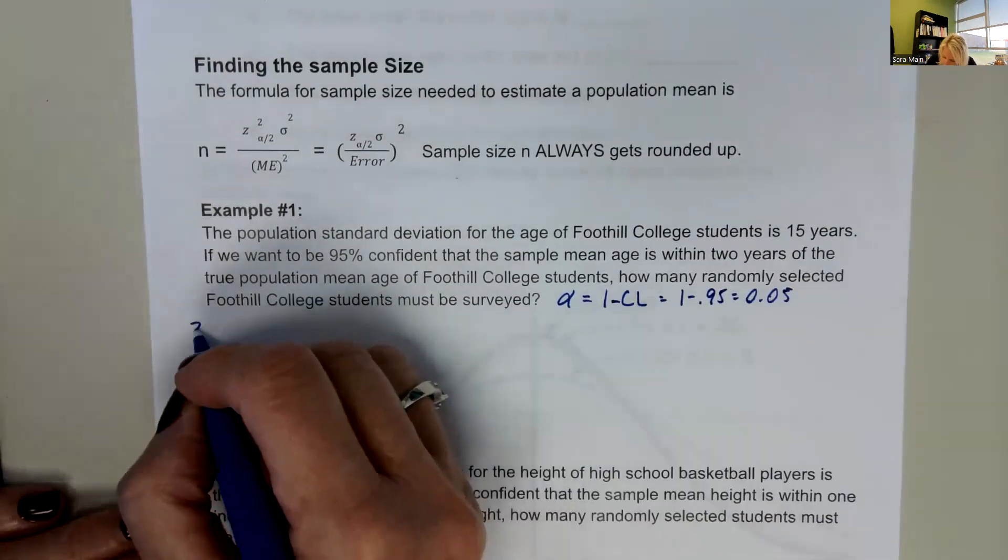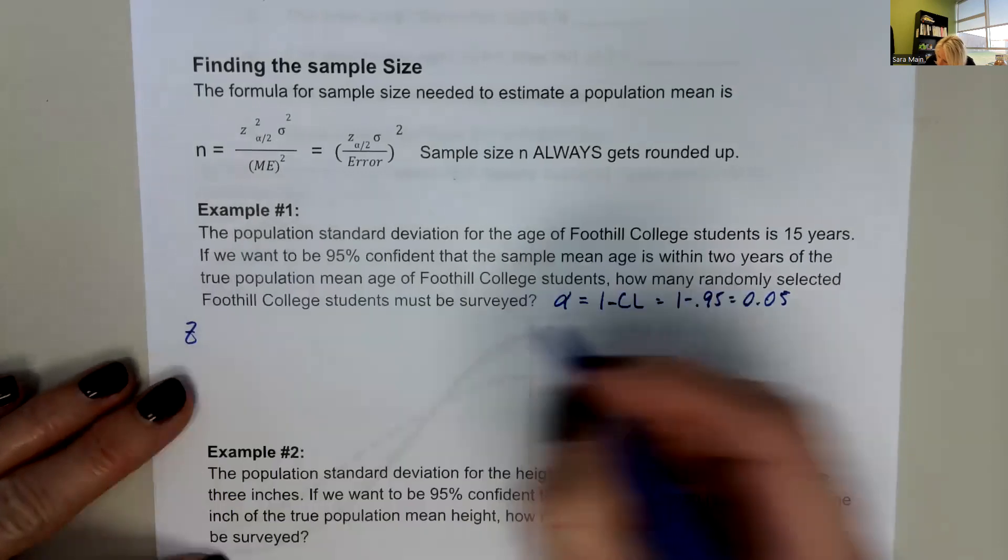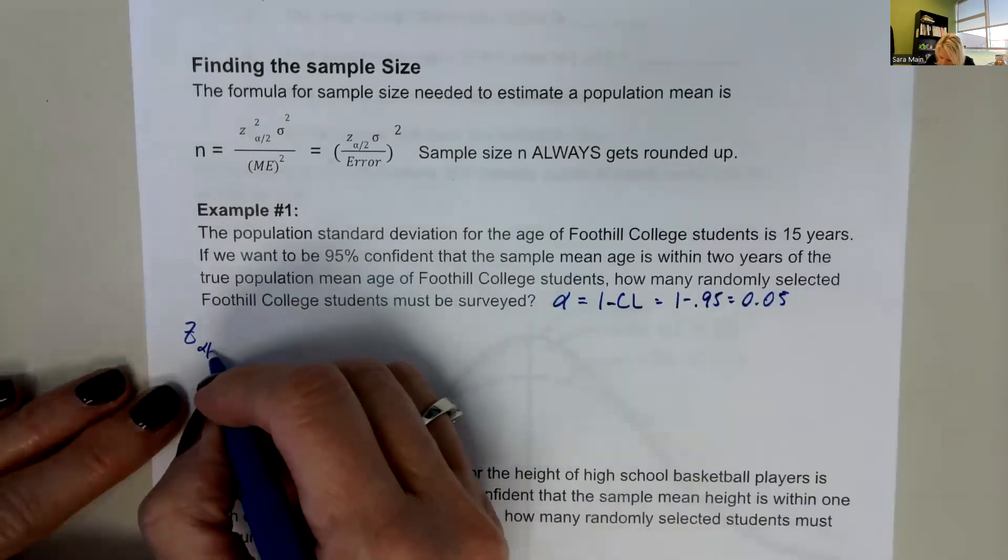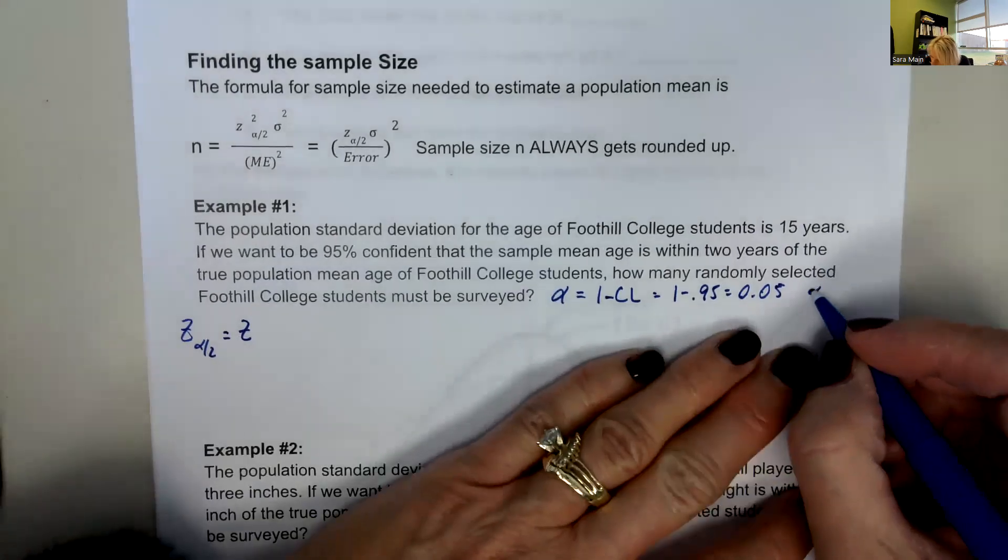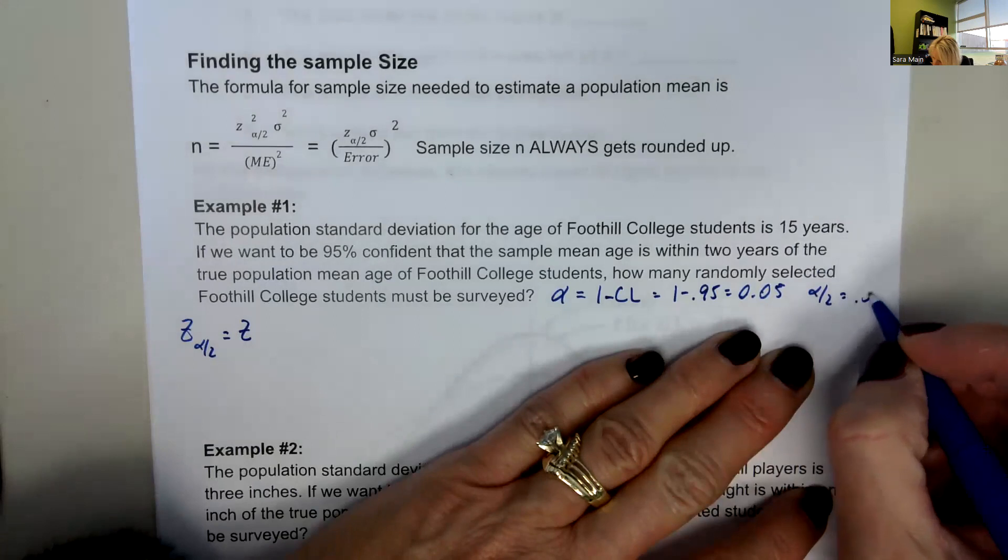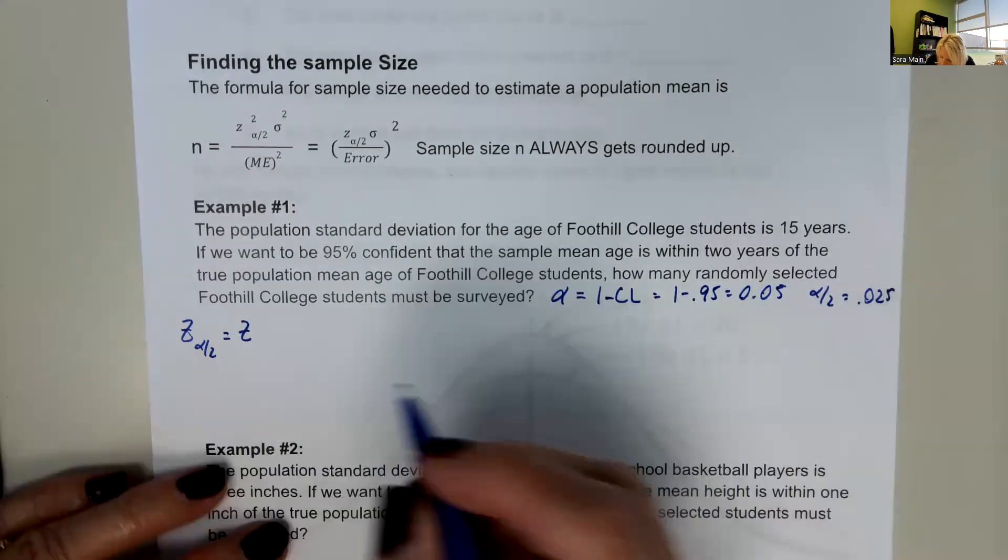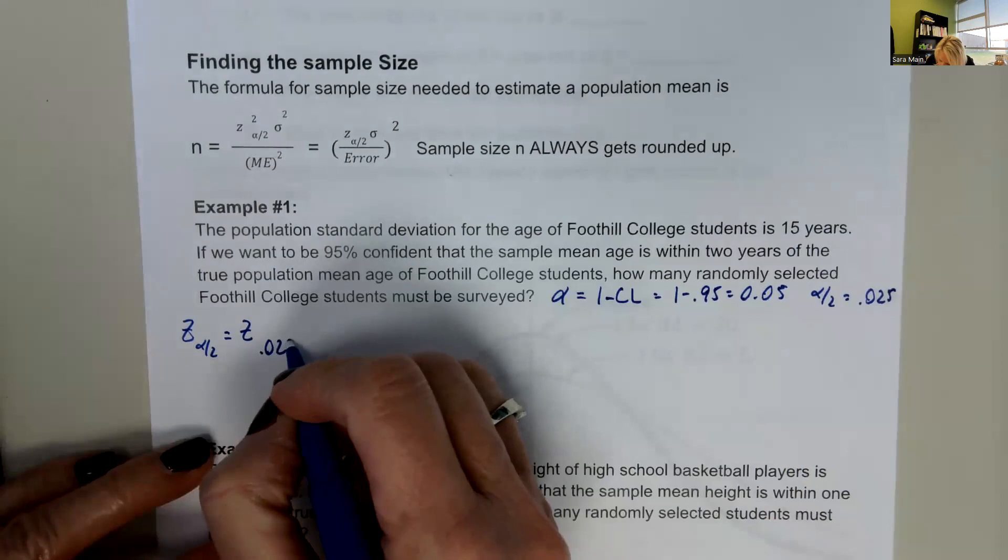And then we want to find the Z of alpha divided by 2. So alpha divided by 2 is 0.025. So we need the Z of 0.025.